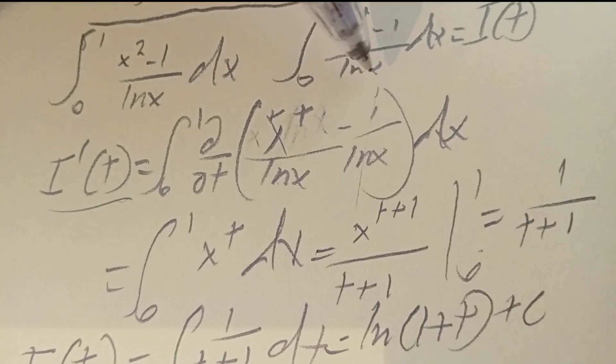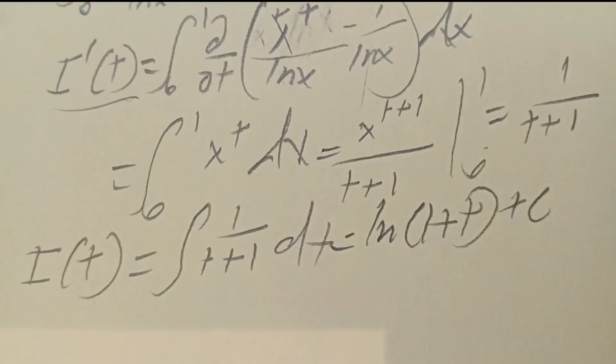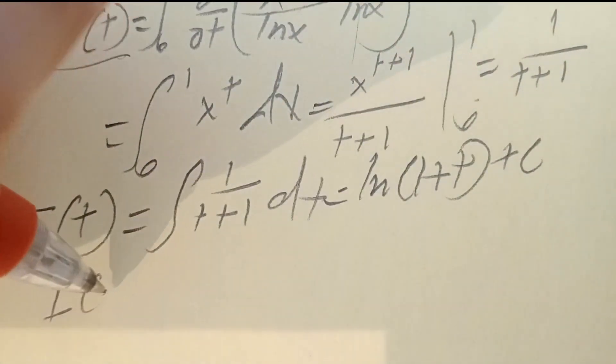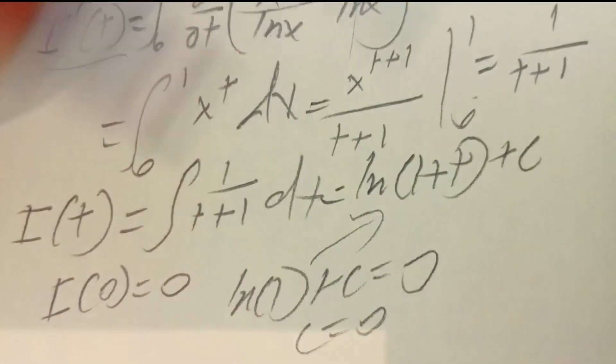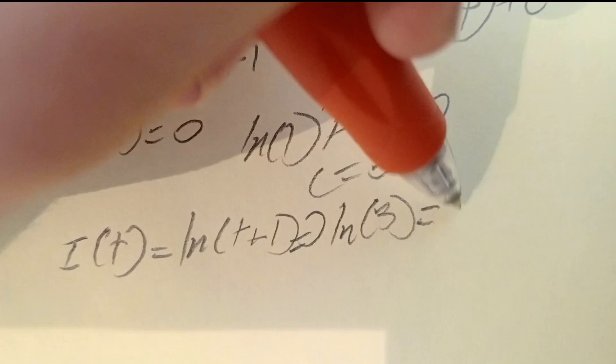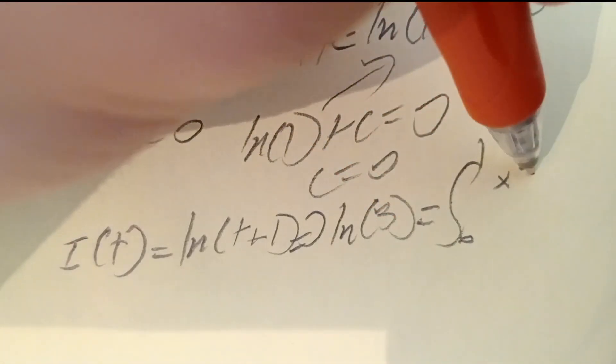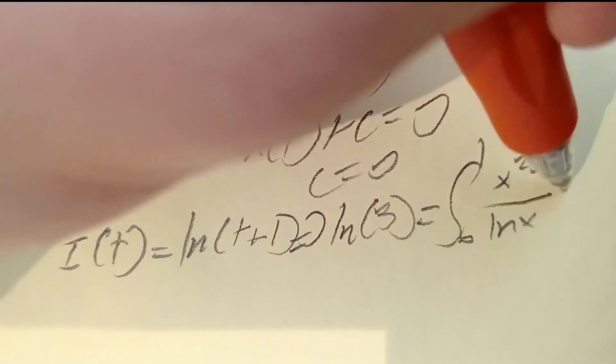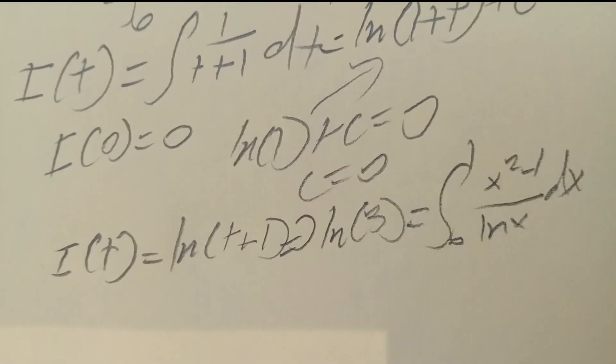At t = 0, the integrand has x to the 0 minus 1 which is 0, so I(0) = 0. Plugging in 0: ln(1) + C = 0, which gives C = 0. Hence I(t) = ln(t+1). We're looking for I(2), which gives ln(3). So the integral from 0 to 1 of (x squared minus 1) over ln x, dx equals ln 3. That's Feynman's trick.